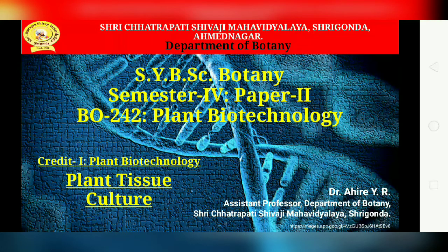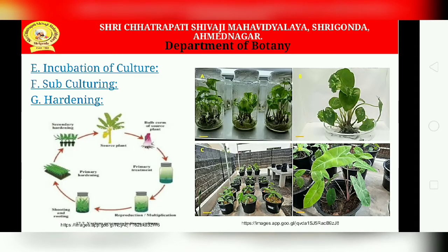Today we are going to discuss about the next topic in plant tissue culture: the incubation of culture. After inoculation, the cultures are incubated in a culture room or a BOD incubator at about 25 degrees Celsius, which is room temperature for certain plants. For particular culture types, incubation below or above 25 degrees Celsius may be needed.